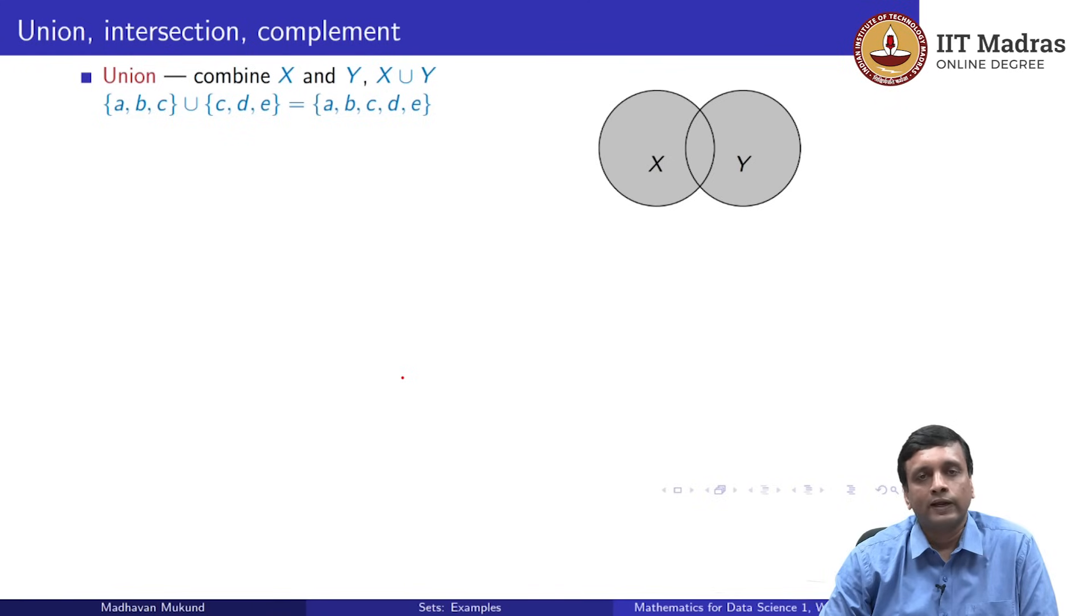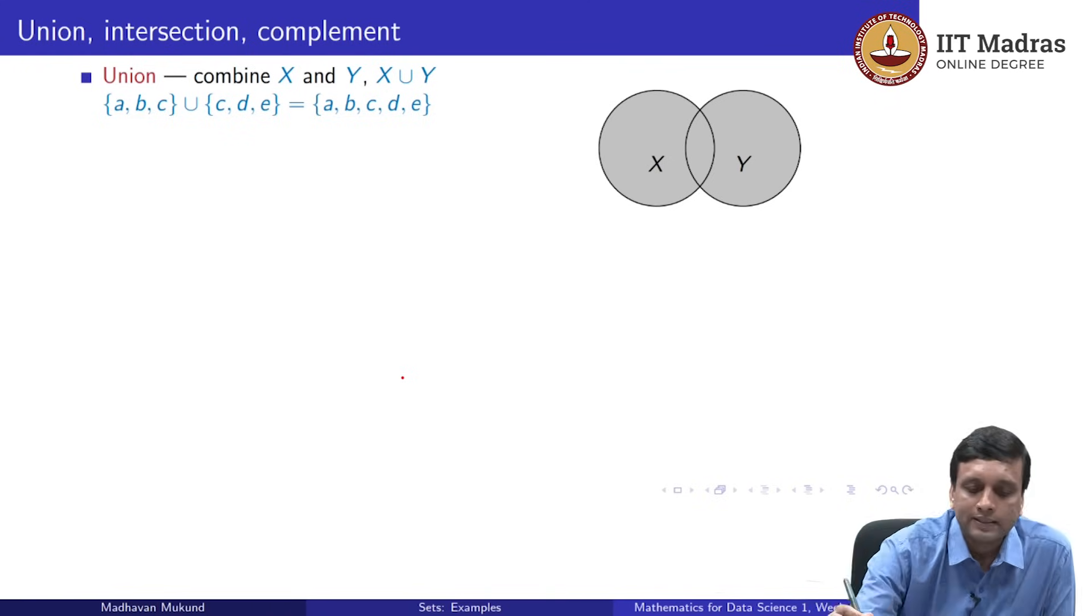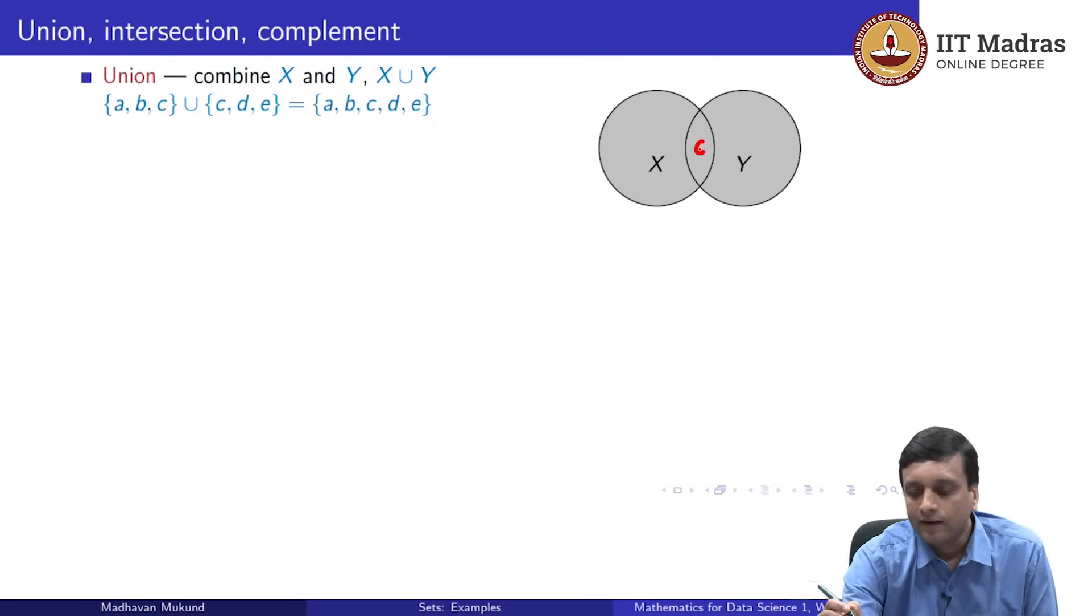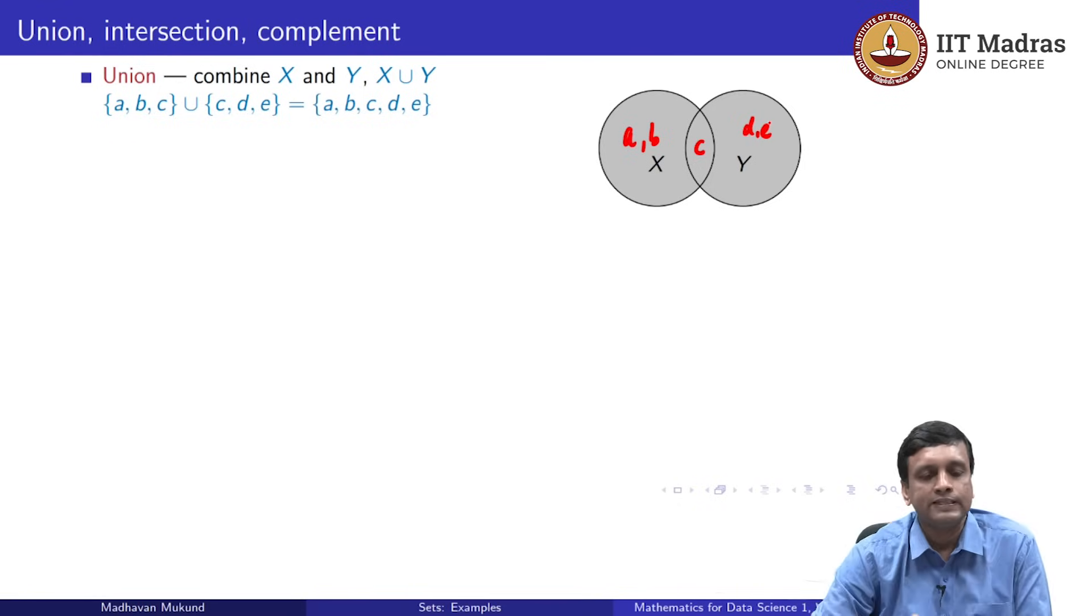The overlapping part between the two diagrams represents the common element. In this case, we would have this common element C over here and then we had A and B over here and we would have D and E over here because D, E belongs only to Y, A, B belongs only to X.